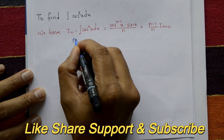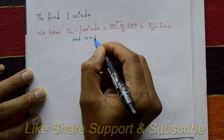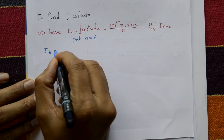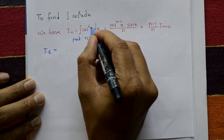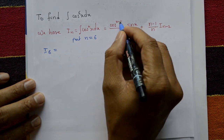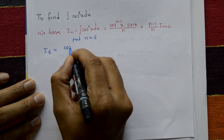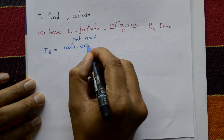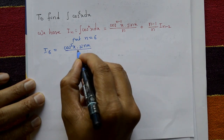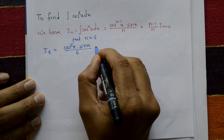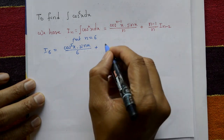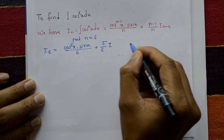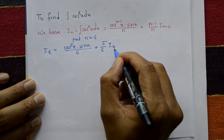Now put n equal to 6. So I_6 equals cos^5 x times sin x divided by 6, plus (6-1)/6 times I_(6-2), which is (5/6) times I_4.